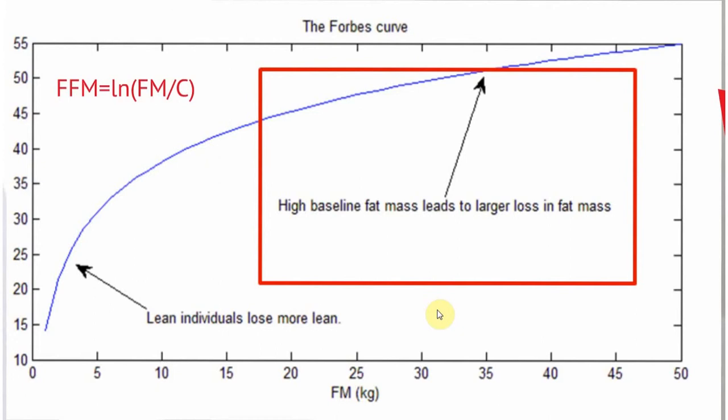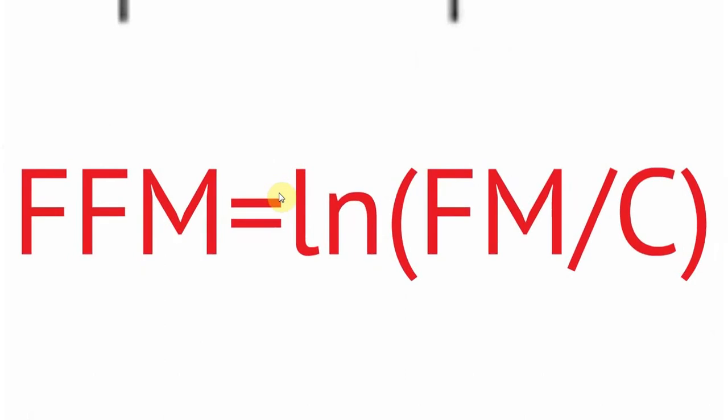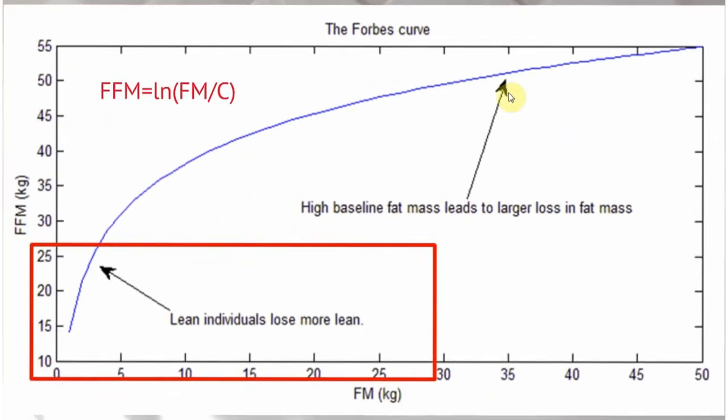The most interesting thing in terms of exercise is the Forbes Curve. Forbes was a pediatrician who had a sense of data and calculus. He has a beautiful book on human body composition that I refer to quite a bit. What he hypothesized is that if someone has high baseline fat mass, when they're dieting or changing their weight, they're going to lose selectively more fat, moving horizontally in this direction. On the other hand, if they were lean, their selection will be more of the lean mass, fat-free mass, so you get a steeper-looking section of the curve. He fit this curve using a log. A couple of us used this Forbes Curve inside our models.